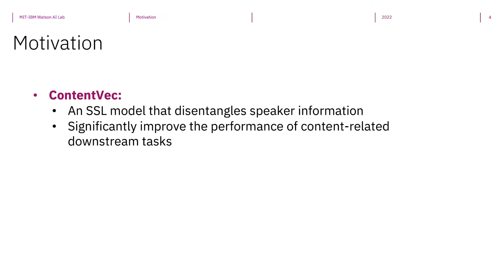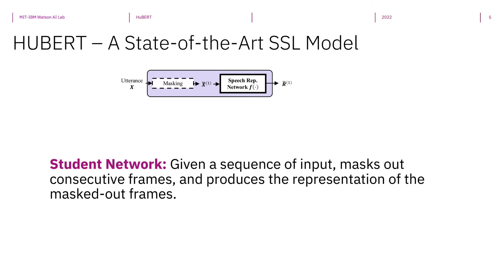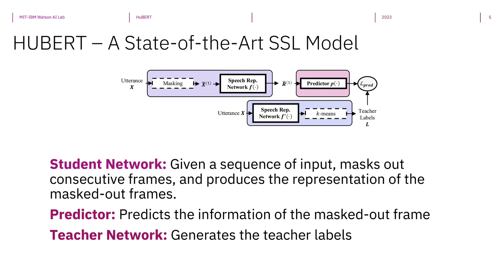ContentVec is based on an existing benchmark SSL model, HuBERT. HuBERT is pre-trained on the canonical masked prediction task and contains three modules. The first is the Student Network, which masks out some frames and outputs speech representations for the masked sequence. The second is the Predictor, which predicts the masked-out frames. The third is the Teacher Network, which converts speech into representations and quantizes them into discrete sequences used as labels for the masked prediction task.